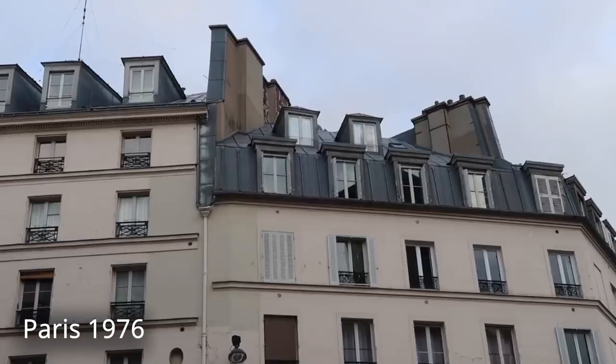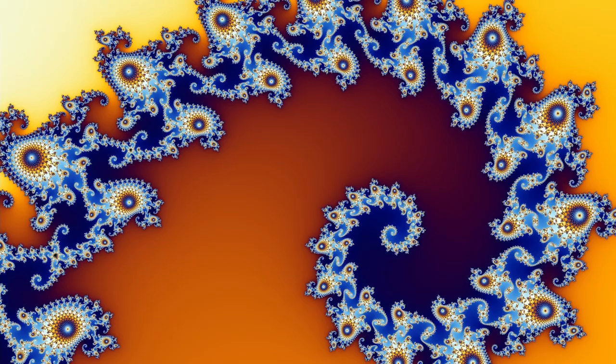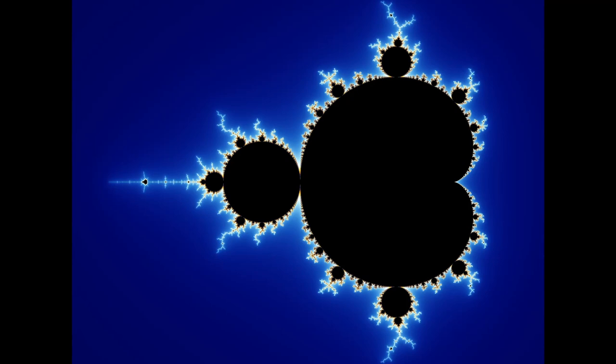In 1976, Paris, Professor John Hubbard was teaching a first-year calculus course. Here's his own story that he told ten years after. About ten years ago, at the birth of computer graphics, mathematicians started seeing extraordinary pictures appearing on their computer screens. My name is John Hubbard, I'm a mathematician. I first ran into such pictures about ten years ago when I was teaching elementary calculus at the University of Paris.